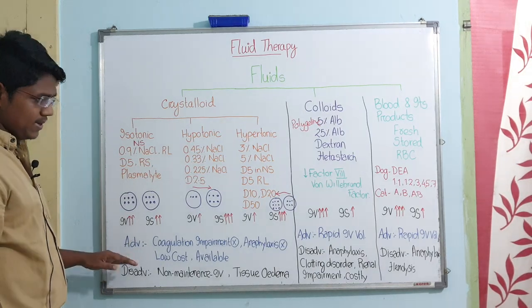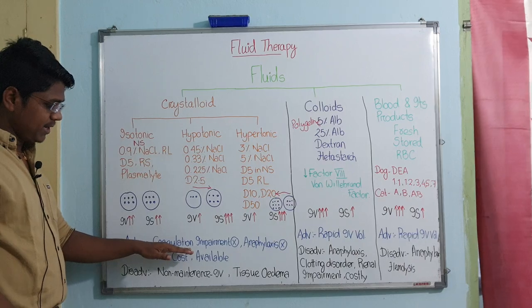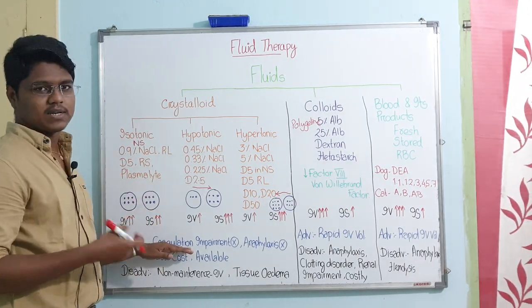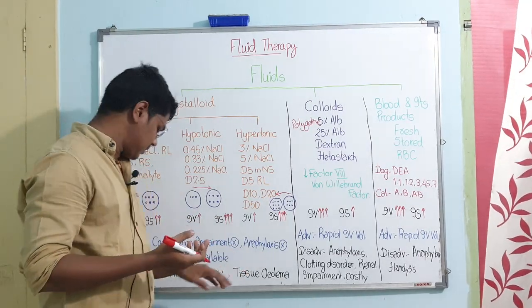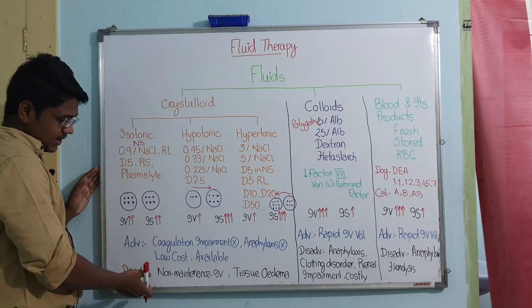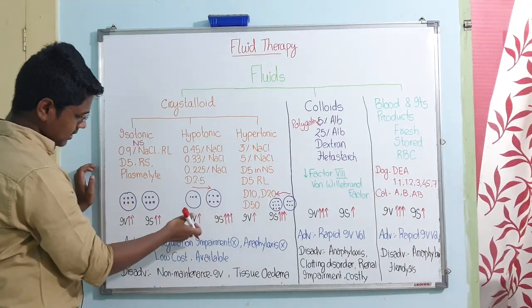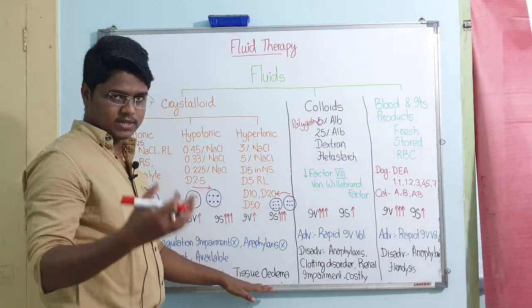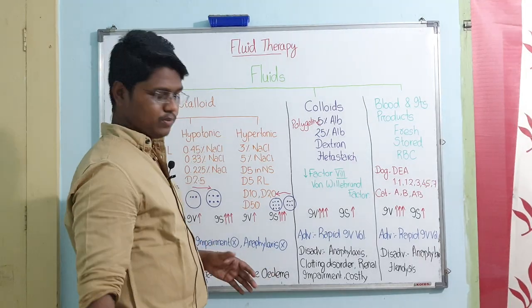Advantages and disadvantages: Crystalloids - there will be minimum coagulation problems because there are no particles to hinder coagulation. No anaphylaxis, cost is low, and there is a wide range of availability. Disadvantage is non-maintenance of intravascular volume - these two compartments are comparative but IV volumes are not maintained adequately. If you give more than required, you will find tissue edema.